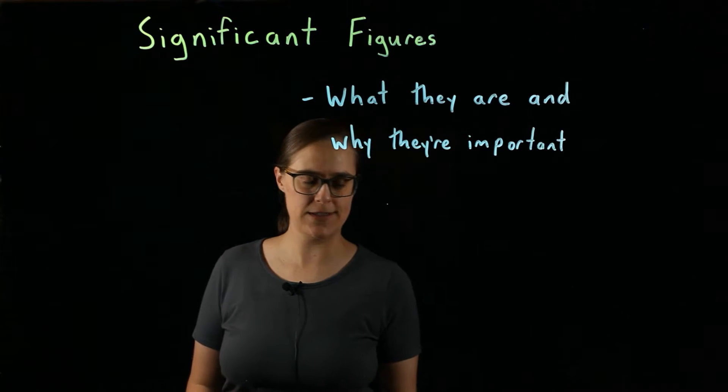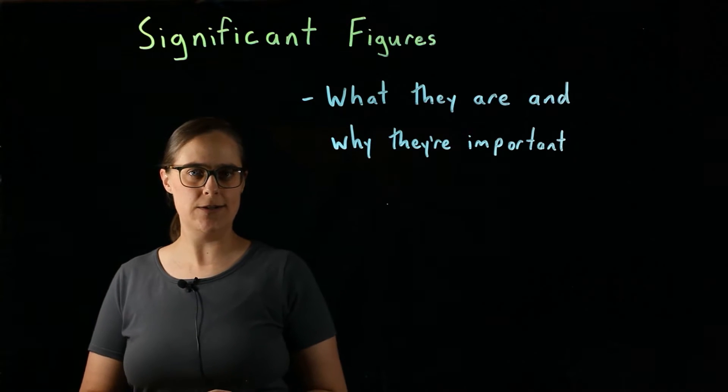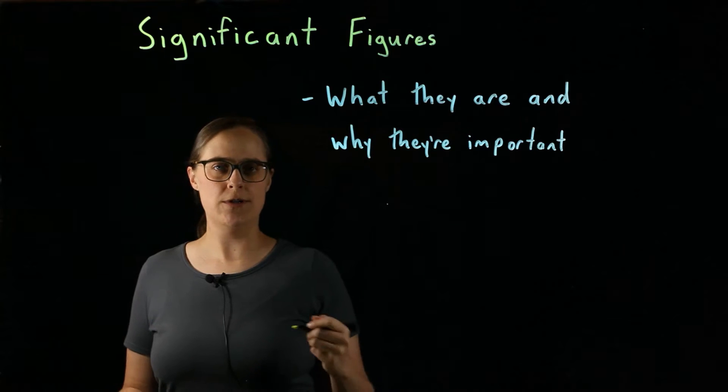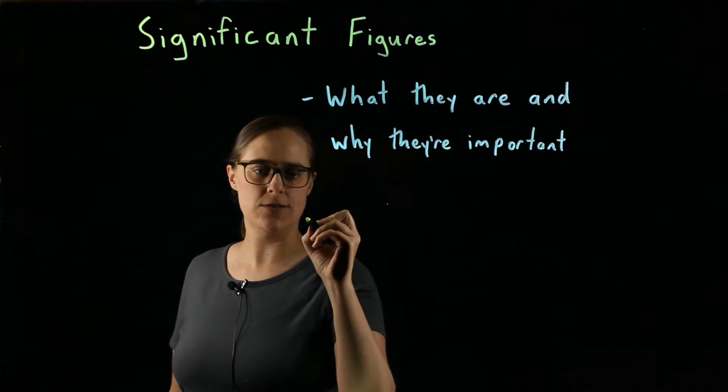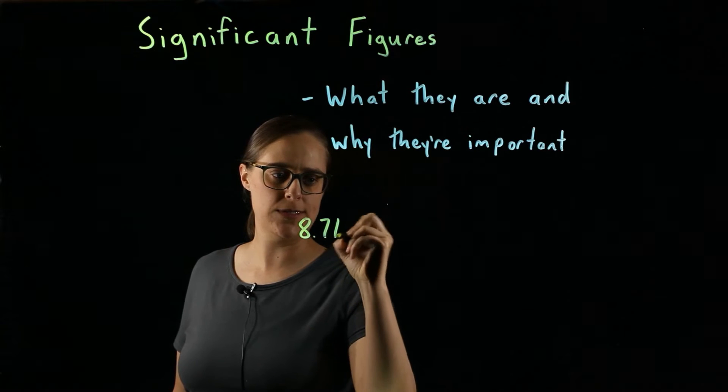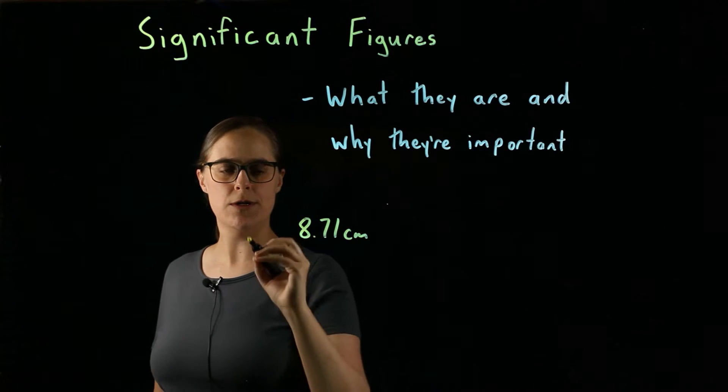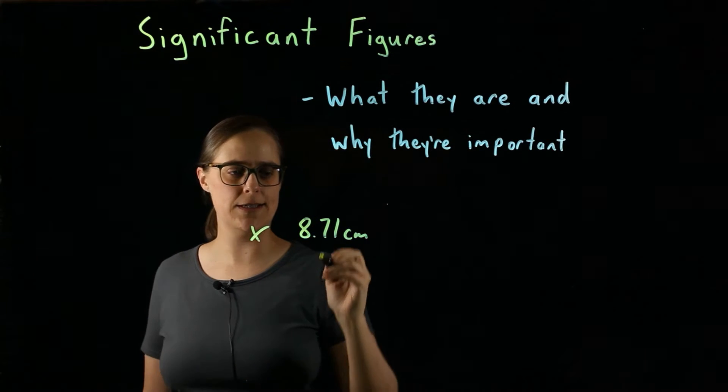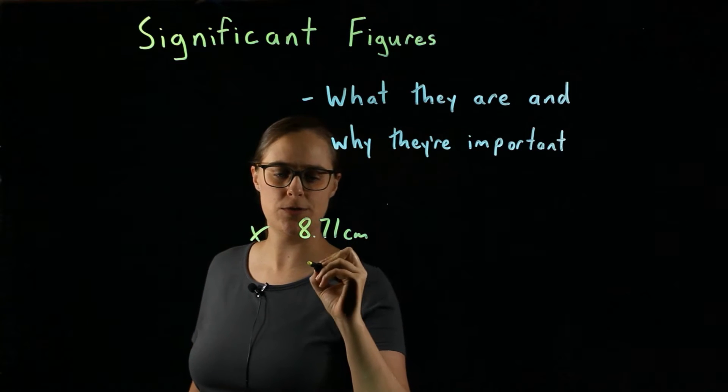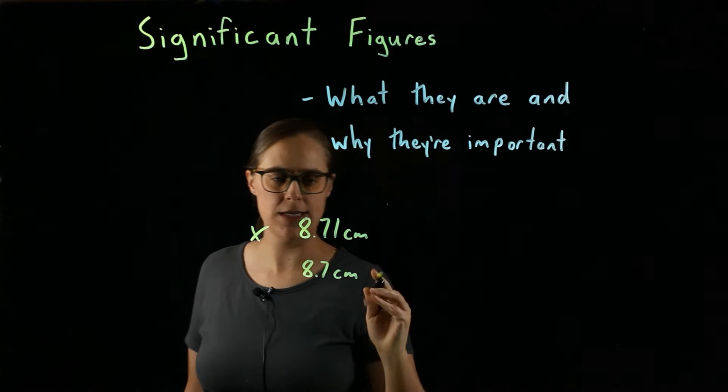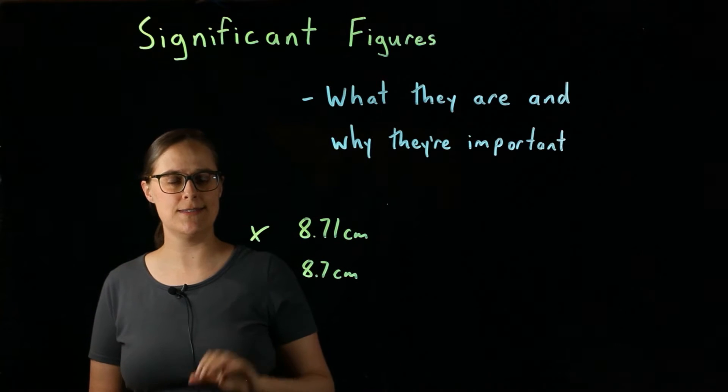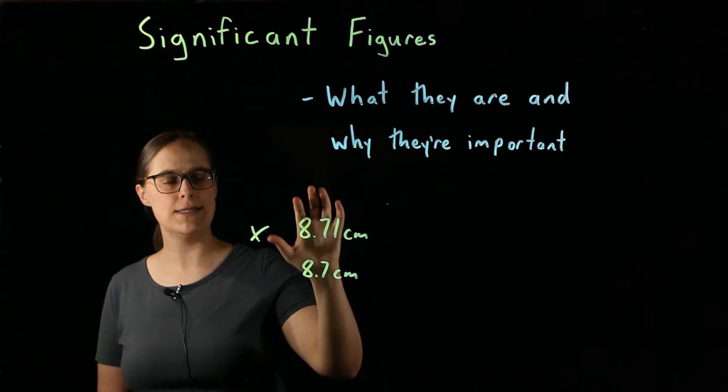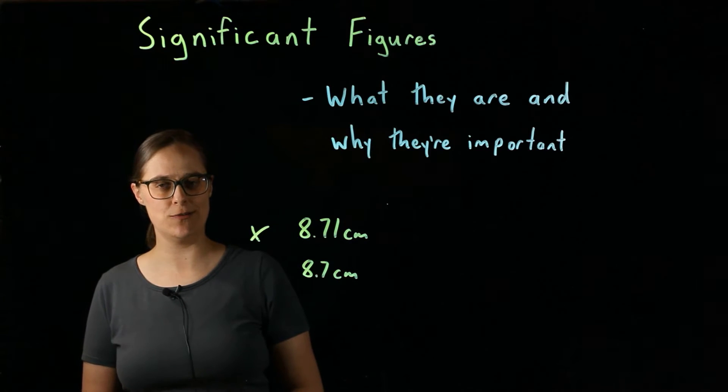Tell me if this has ever happened to you. Let's say you're in a science class. You turn in some homework assignment or an exam. One of your answers was 8.71 centimeters, and it was marked wrong or you had some points taken off because you were supposed to round this to 8.7 centimeters. If this type of story sounds familiar to you, this is a series of videos that can help. This is a problem with significant figures.